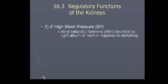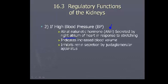If blood pressure is too high, there's another mechanism called atrial natriuretic hormone, abbreviated ANH. It's secreted by the right atrium of the heart. It's released when the heart starts stretching too much, signaling increased blood pressure. What ANH does is inhibit renin secretion — if there's high blood pressure, renin secretion is stopped by ANH.